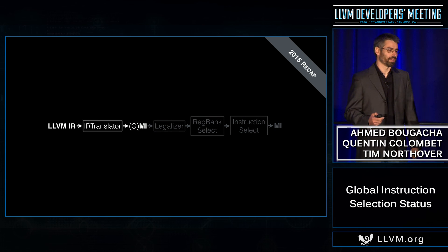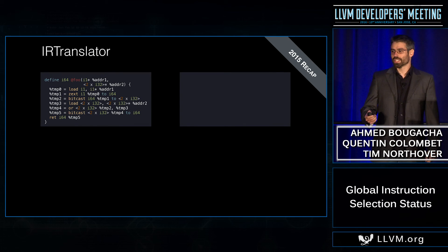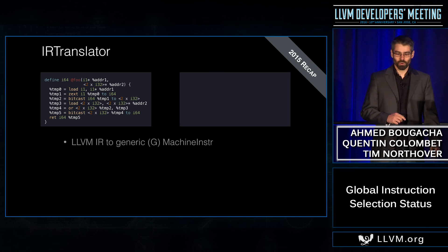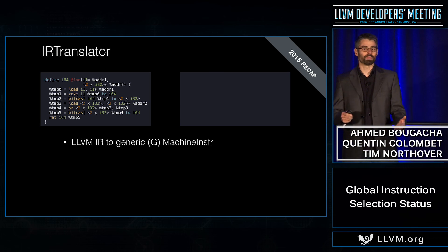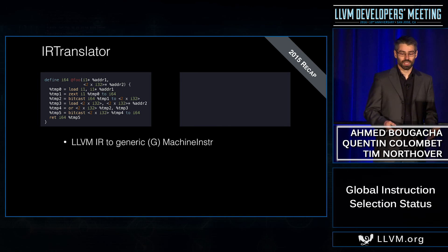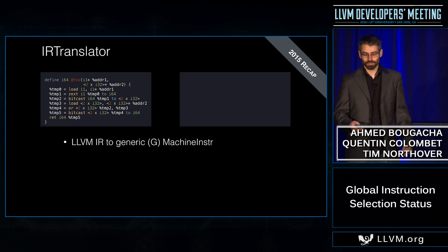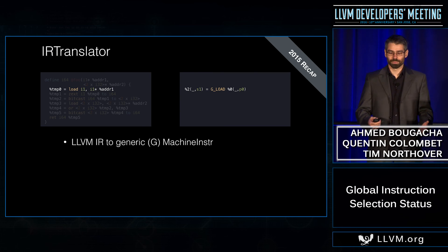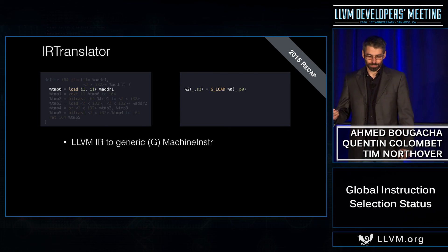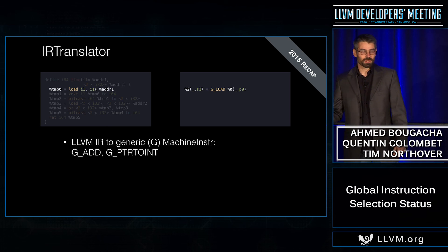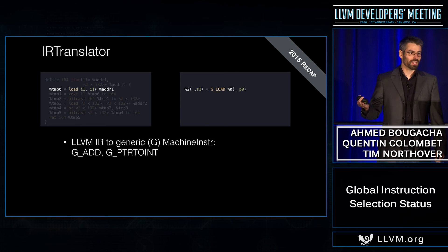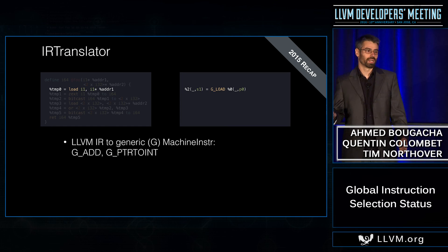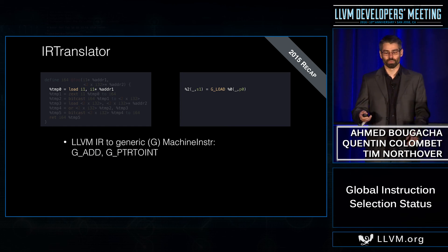So let's start with the IR translator. The goal of the IR translator is to translate the LLVM-IR to machine instructions. However, we have instructions that we may not be able to represent at this point in the actual target, so we need some generic machine instructions. Generic machine instructions have generic opcodes. Like copies and phis, those opcodes are available for all targets. They are prefixed by G underscore, so you have G_add, G_pointer_to_int, and so on.